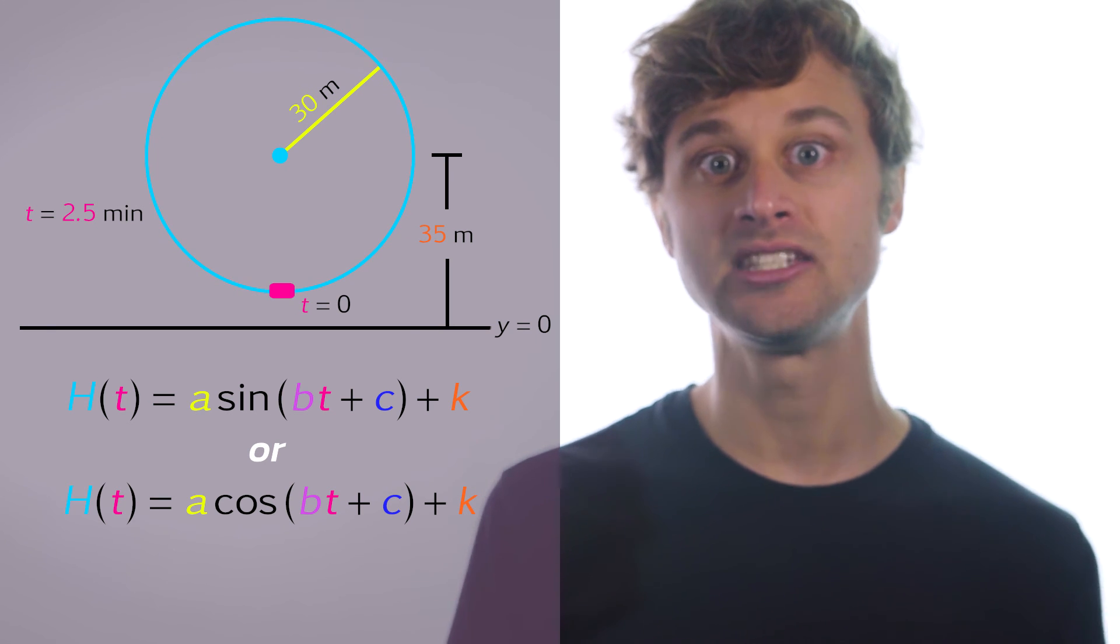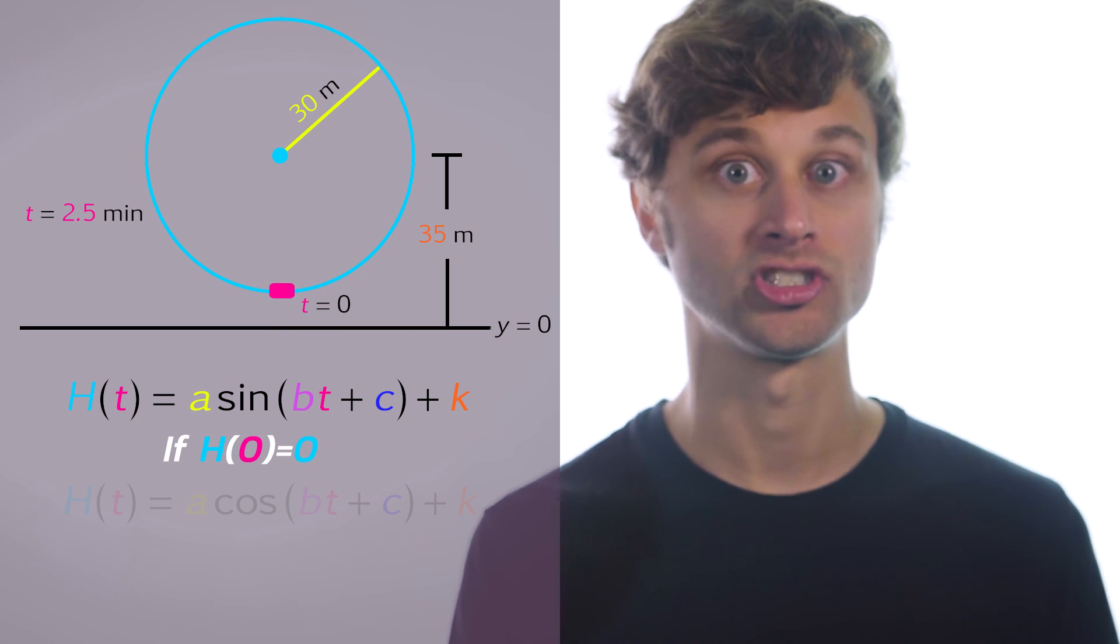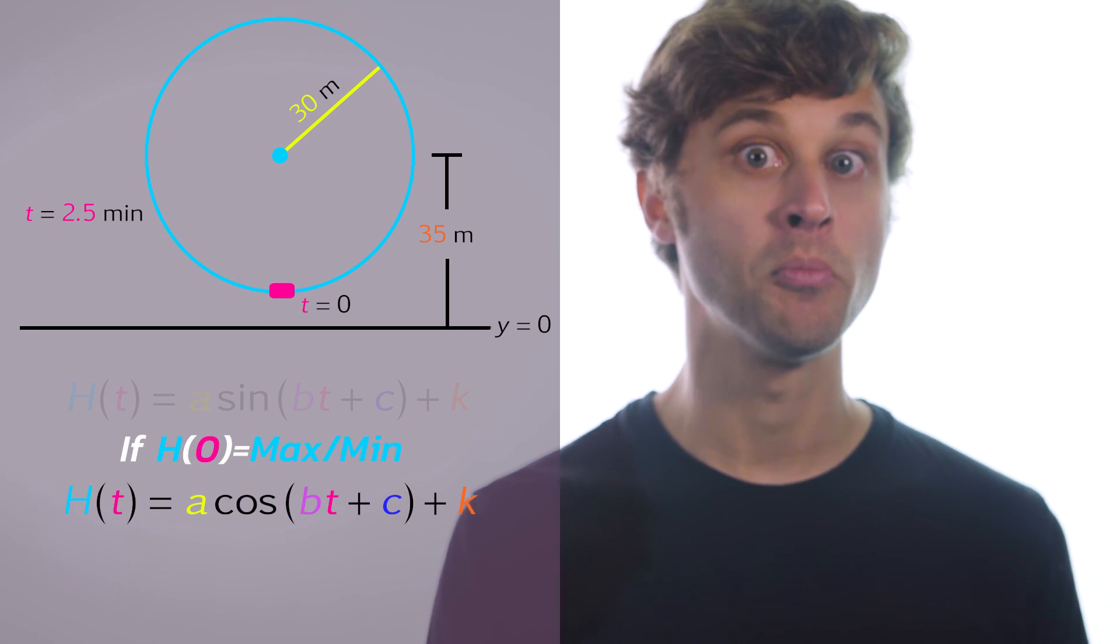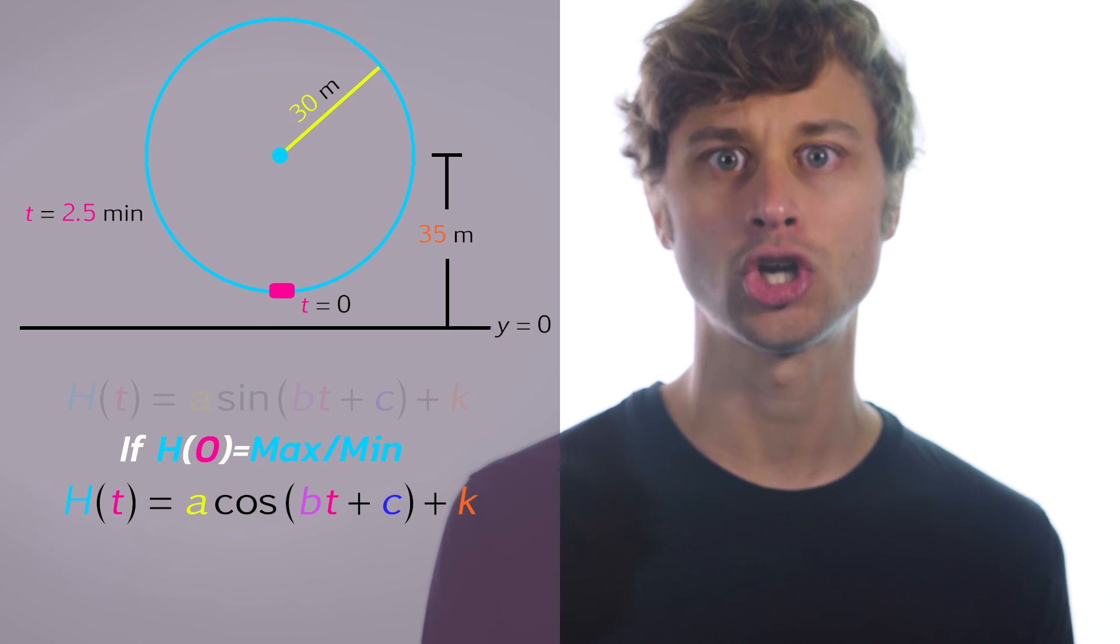My rule of thumb is this: If the function needs to have a value of zero at t equals zero, then I choose sine. If the function needs to be a maximum or minimum when t equals zero, I choose cosine.